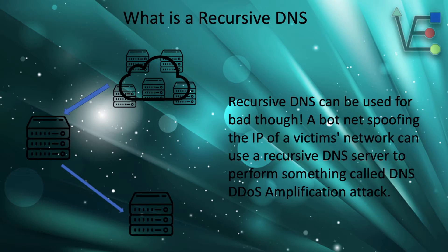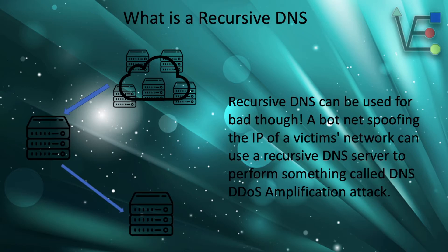The DNS server believes it is being contacted by the victim's network trying to resolve DNS names and replies back with the answer. If this is being done hundreds of thousands of times a second by a botnet, the added size of the DNS replies can quickly flood a victim's network, rendering it impossible to use — like a traffic jam in rush hour on the highway.